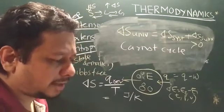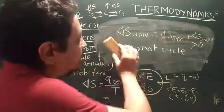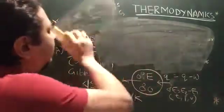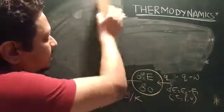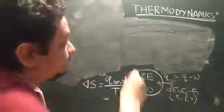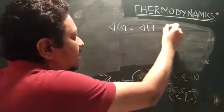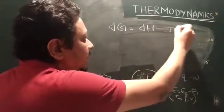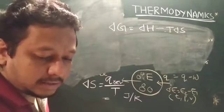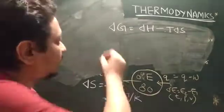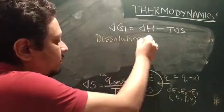If you combine the first law and the second law of thermodynamics, you get Gibbs free energy. The expression is delta G equals delta H minus T times delta S. For example, in a process known as dissolution, this relationship becomes important for understanding energy changes.